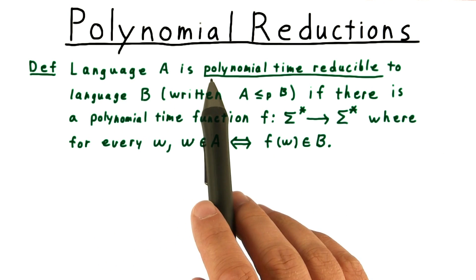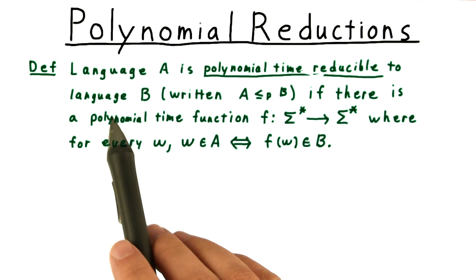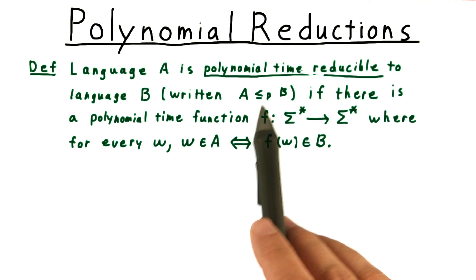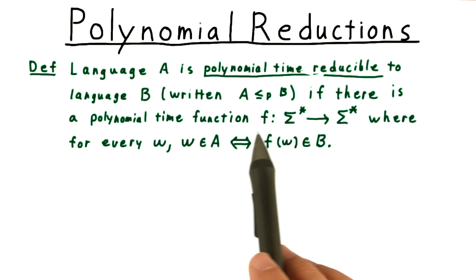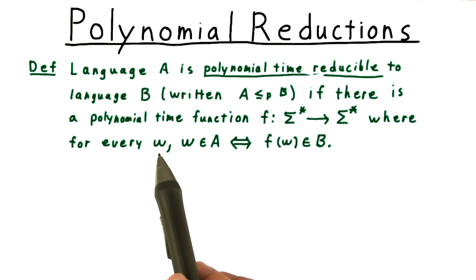A language A is polynomial reducible to a language B, and we write this as A less than or equal to B with the subscript P over the less than or equal to sign, if there's a polynomial function f, where for every string w,